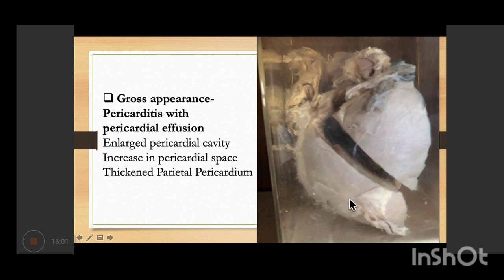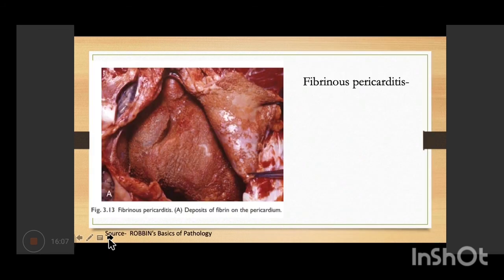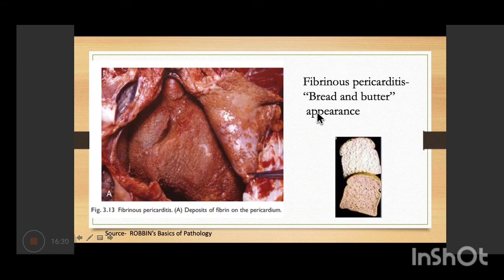Fibrinous pericarditis has a particular name — 'bread and butter appearance.' This is because when two pieces of bread with butter between them are separated, the resulting appearance resembles fibrinous pericarditis on gross examination.